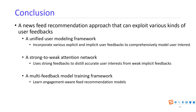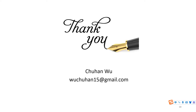In this work, we study a news feed recommendation problem using various kinds of user feedbacks. We propose a unified user modeling framework to incorporate various explicit and implicit feedbacks to comprehensively model user interest. We propose to use a strong-to-weak attention network to distill positive or negative feedbacks from weak implicit feedbacks. We also use a multi-feedback model training framework to learn engagement-aware recommendation, so we can recommend news that are not only clicked but also satisfy users. That's all — thanks for your attention.